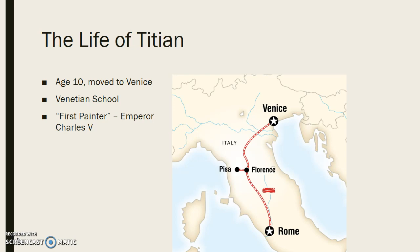At the age of ten, he moved to Venice to live with his uncle, and that's where he developed an interest in art and painting. He was very important in the Venetian school, and he was called 'the first painter' by Emperor Charles the Fifth, who also gave him the rank of Count Palatine.